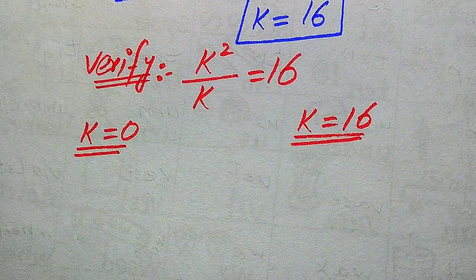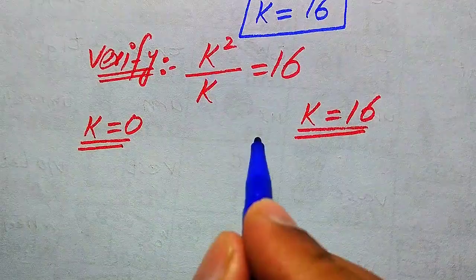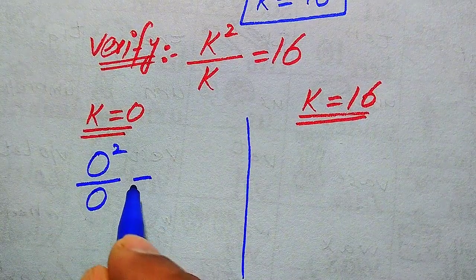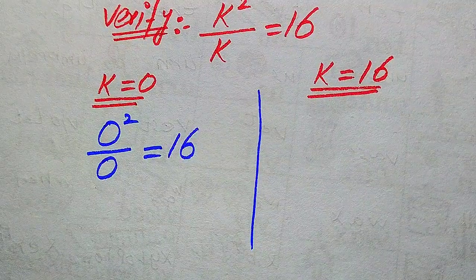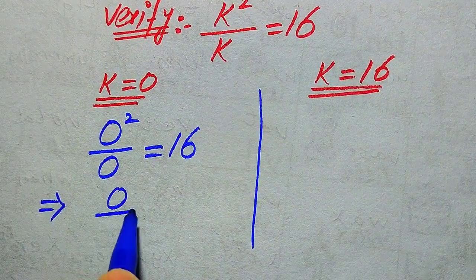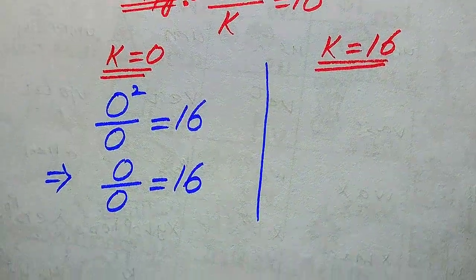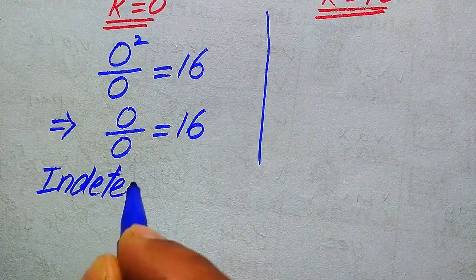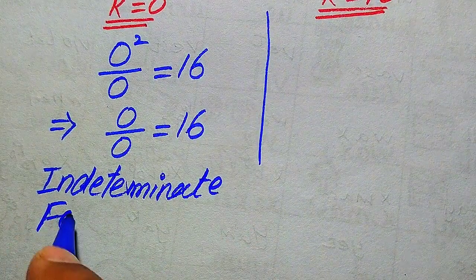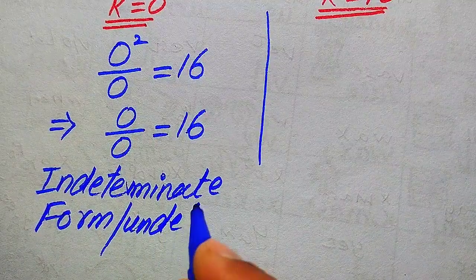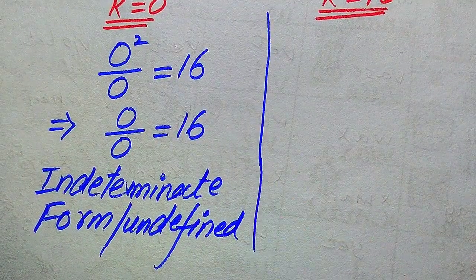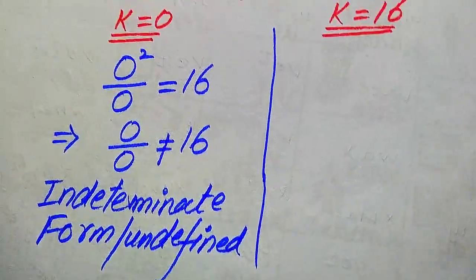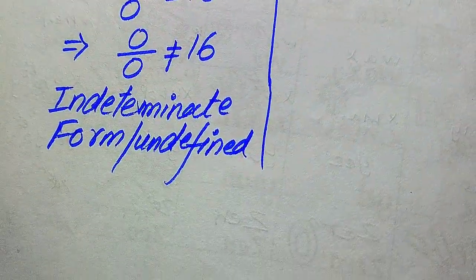First, we verify k equals 0 by substituting into the left-hand side. This gives us 0 squared divided by 0, which becomes 0 divided by 0. This is the indeterminate form — in other words, it is undefined. Since the left-hand side is undefined, both sides are not equal.